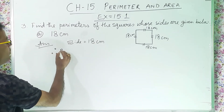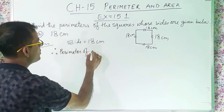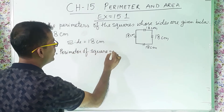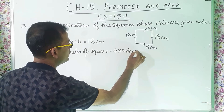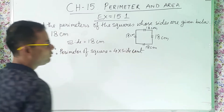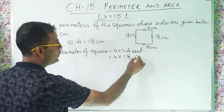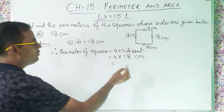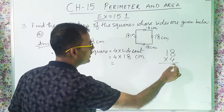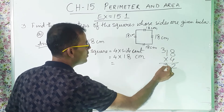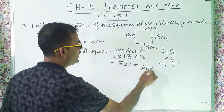Therefore, perimeter of square equals 4 into side. I will put the value of the side: 18 cm. So 4 into 18 — 4 eights are 32, carry 3; 4 ones are 4, plus 3 is 7 — gives us 72 cm. And this is the answer.